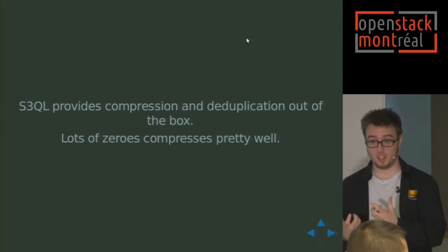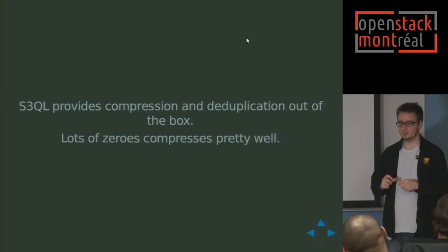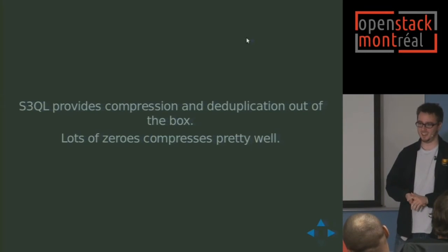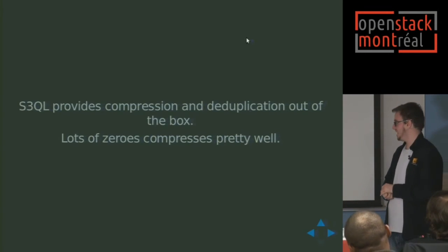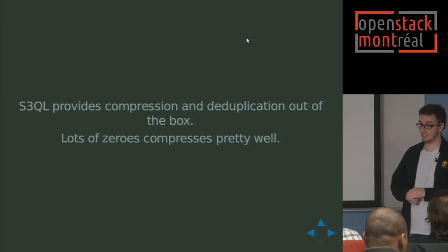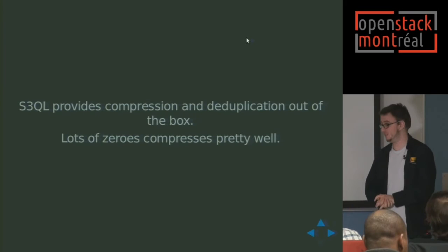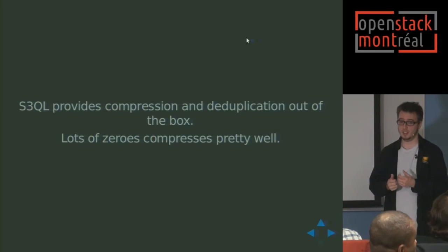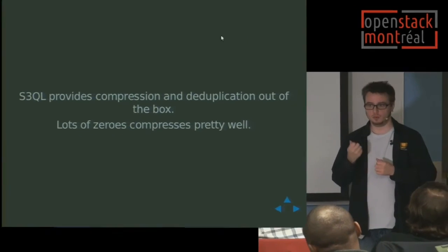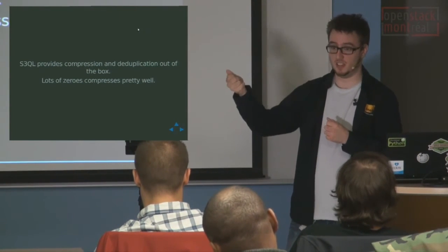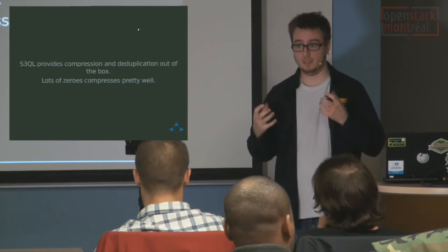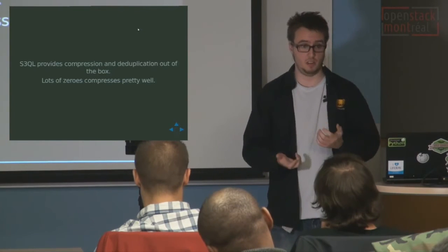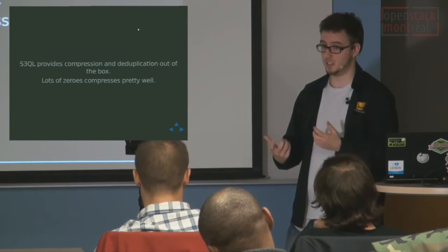The deduplication gets complex quickly. The documentation actually says, don't ask how the deduplication works, just be thankful that it works. The guys maintaining this are obviously very good at what they do. The key point is that what costs you money is the amount of space you're using in the object storage service. So if you have compression and deduplication on your filesystem, for backups and archivals — which are really good use cases for S3QL — it becomes very economically interesting.